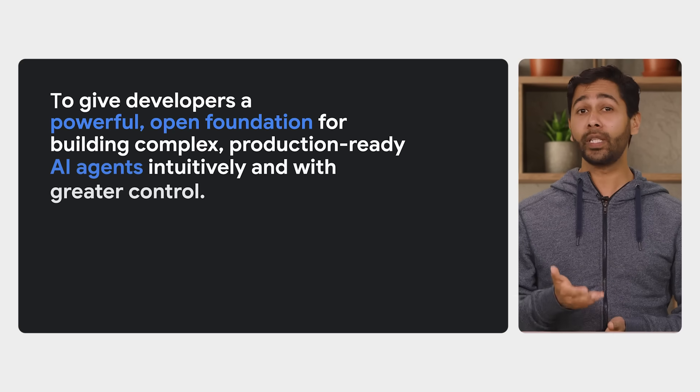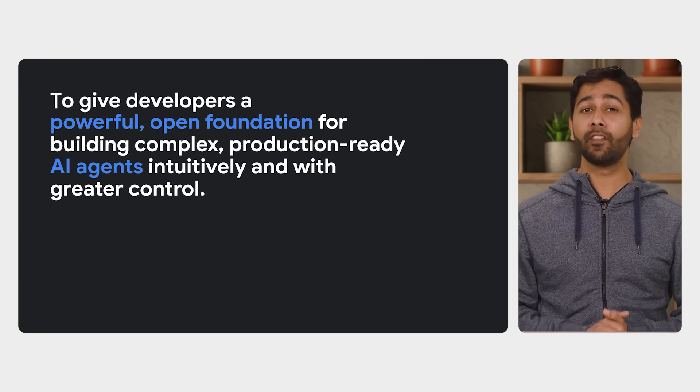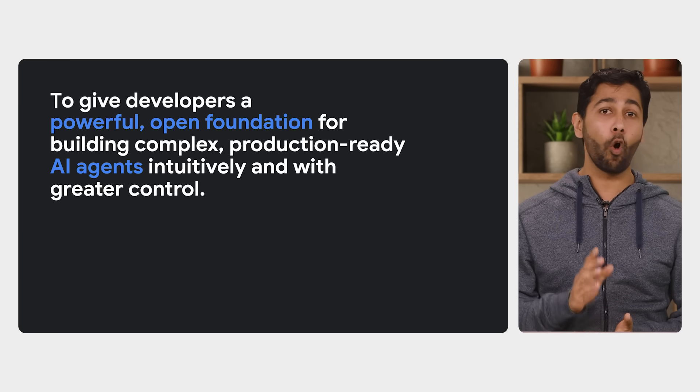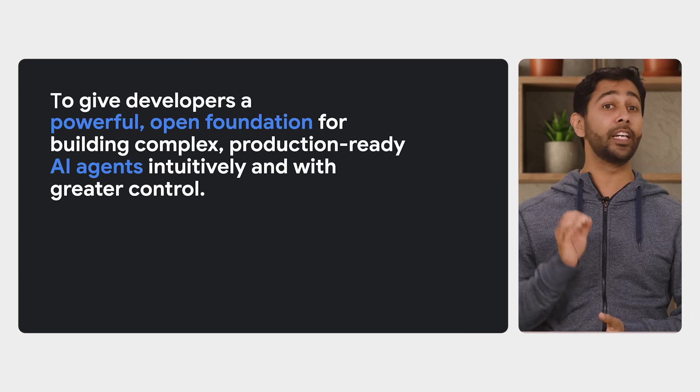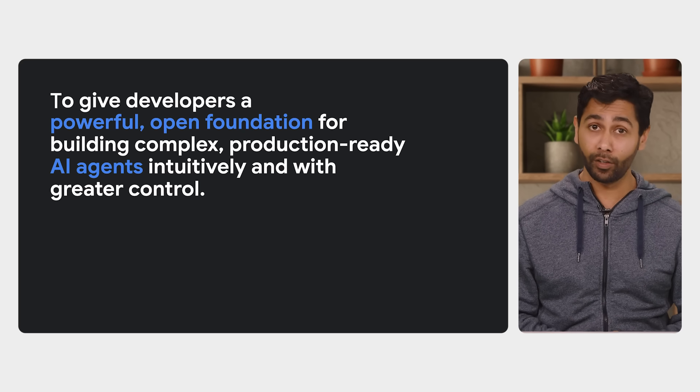We felt that friction firsthand building agents internally for our customers. And that's exactly why today we're thrilled to release a brand new open source project, the Agent Development Kit, or ADK for short. It is built directly from Google's experience creating production-grade agents. Our goal with ADK is simple: to give developers a powerful open foundation for building complex, production-ready AI agents intuitively and with greater control.